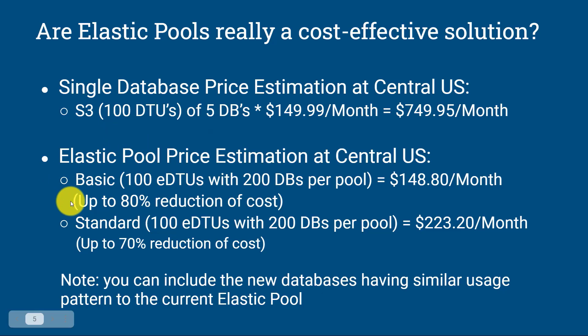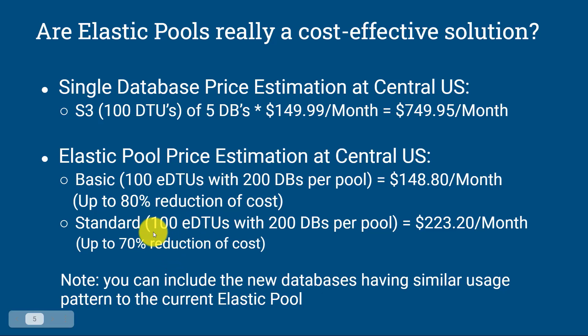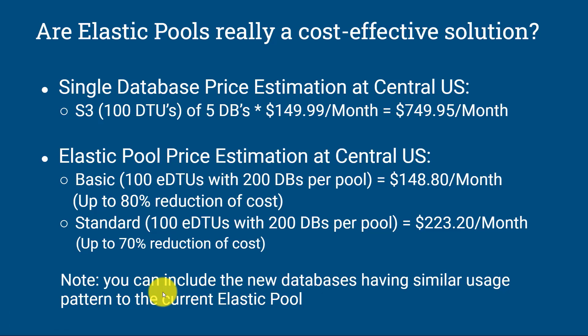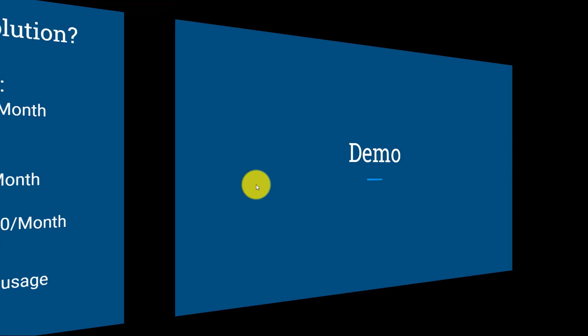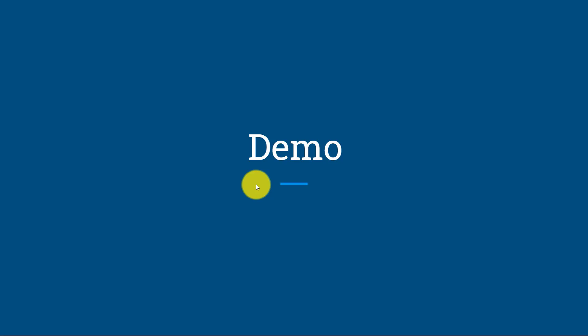If I go with the standard tier, the cost would be $223 per month, and the cost reduction is 70%. In future, if you identify databases having a similar usage pattern, you can add them to the current elastic pool. The limitation is 200 databases. In the demo section, we are going to create an elastic pool and add and remove databases from the elastic pool.